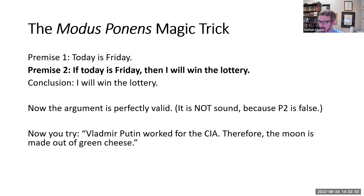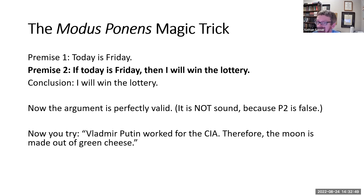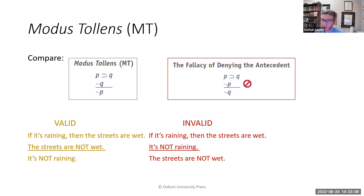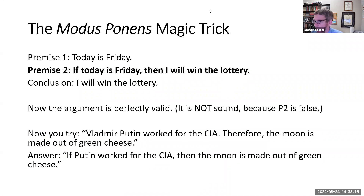Now try it yourself: 'Vladimir Putin worked for the CIA, therefore the moon is made out of green cheese.' What premise would make that a valid argument? That's right — 'If Putin worked for the CIA, then the moon is made out of green cheese.' Add that premise in and you have a valid, though certainly not sound, argument. We'll talk about modus tollens in the next video.